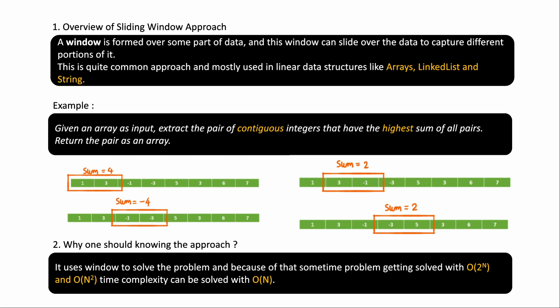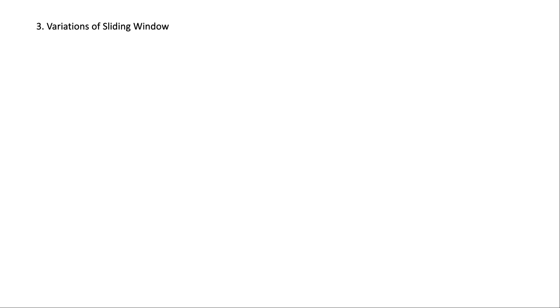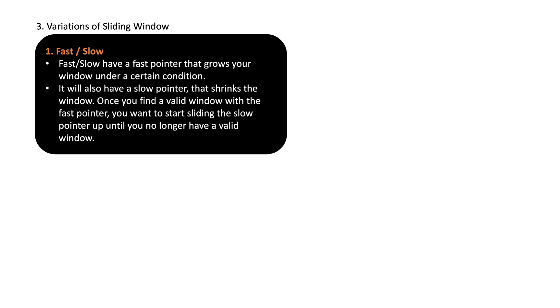Let's understand the different types of sliding windows based on how their start and end indexes are moving. Your window will have a start index and an end index; based on how these two pointers move, we get different variations in how your window grows or slides. There are four total variations.